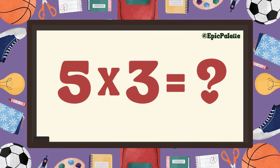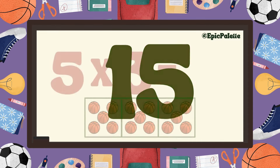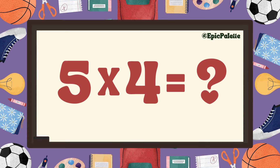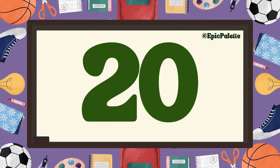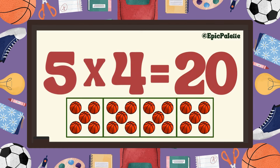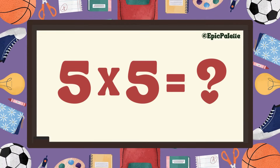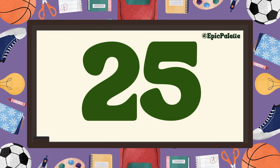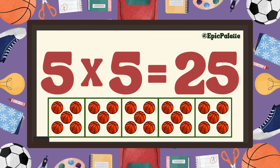5 times 3 equals... 15. That's right. 5 times 3 equals 15. Excellent. 5 times 4 equals... 20. That's right. 5 times 4 equals 20. Excellent. 5 times 5 equals 25. That's right. 5 times 5 equals 25. Great job.